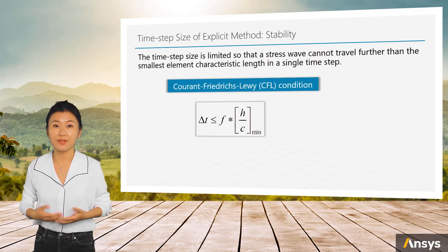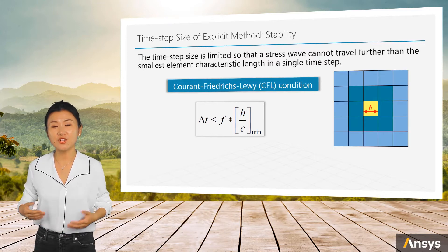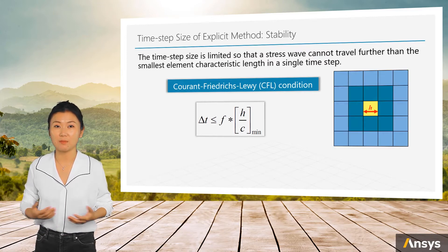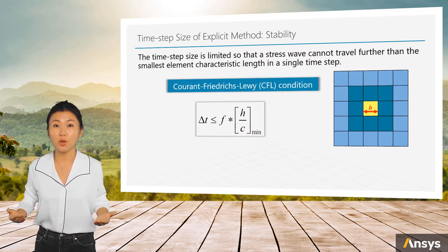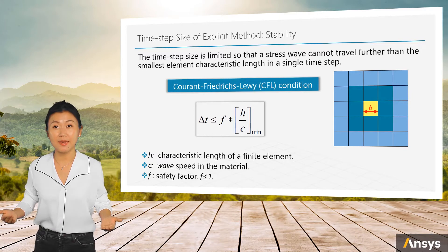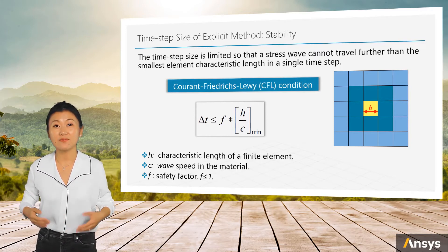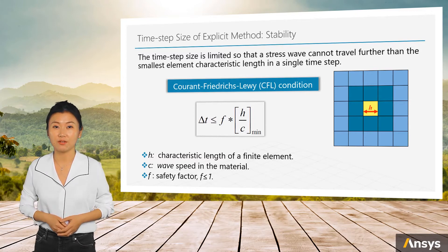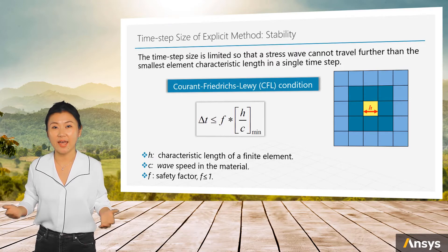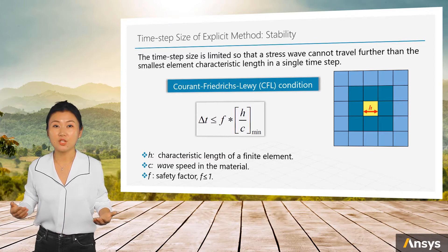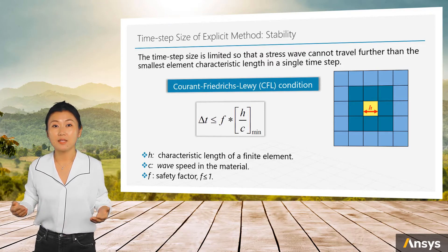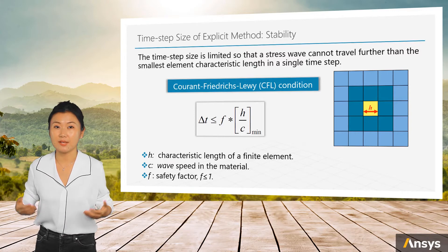Let h represent the characteristic length of a finite element — you can consider it as a kind of average dimension of an element. Let c represent the wave speed in the material; the value of c depends on what kind of material we are simulating. The ratio h/c gives the time for the wave to pass one element. We find the minimum of this ratio across all elements of the simulation and multiply by a safety factor f, which is usually a value equal to or smaller than 1. The time step used in an explicit analysis should be smaller than this value.